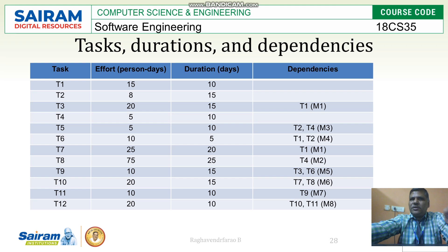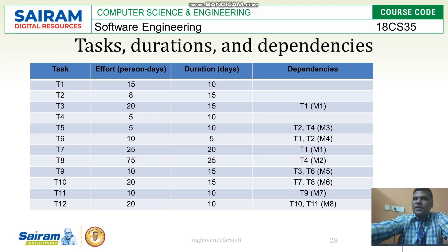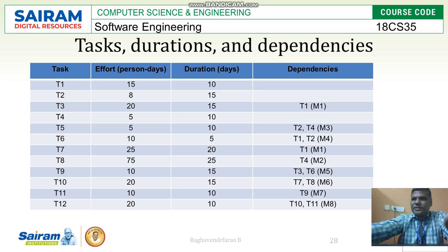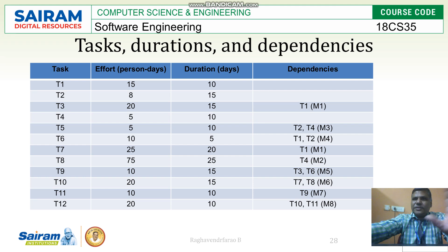T1, T2, and T4 can all start simultaneously. Once T1 completes, T3 can start. T5 needs T2 and T4 to complete first — the timing and days have to be calculated, and only then can T5 be started. Like that, up to the 12th task: to complete T12, the deadline at the end, T10 and T11 must be completed. These are the tasks, durations, and dependencies for this one project with 12 tasks.